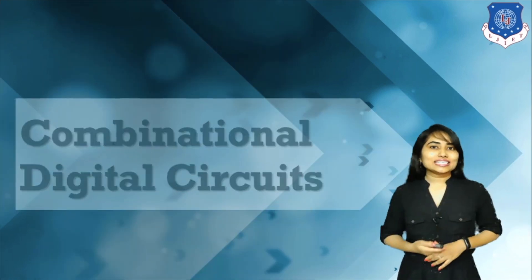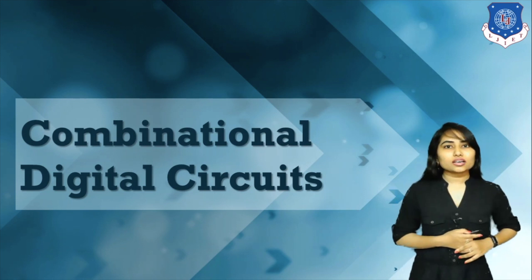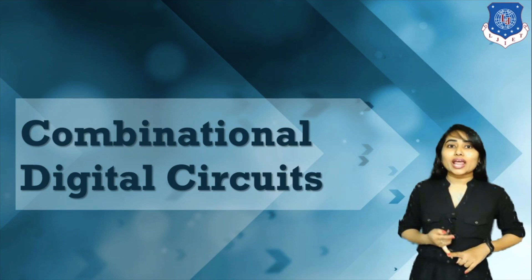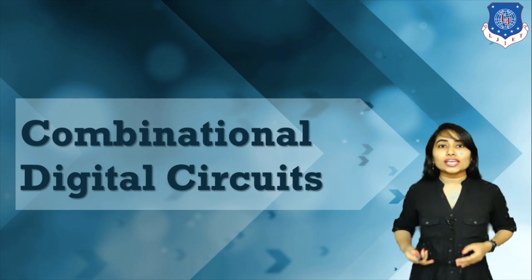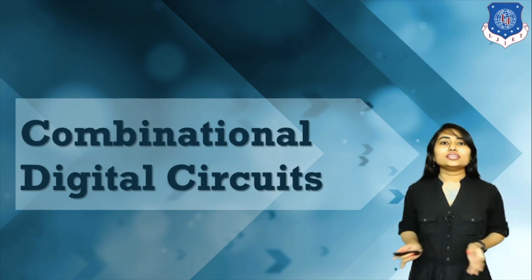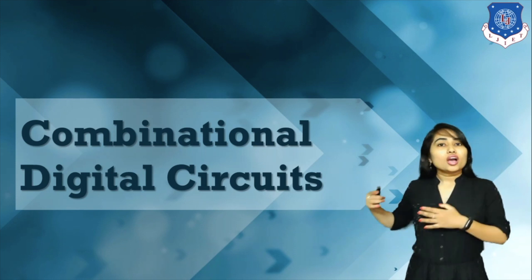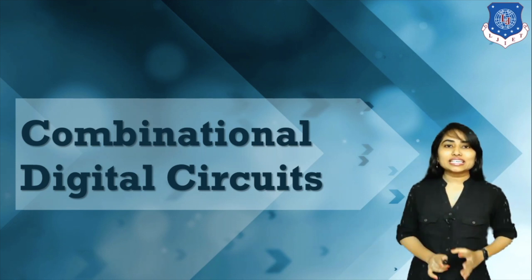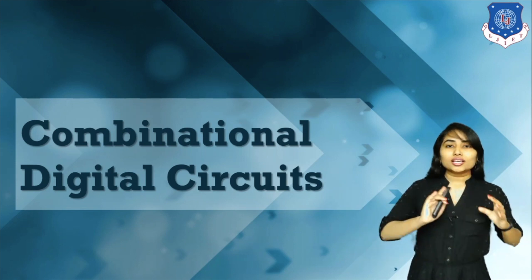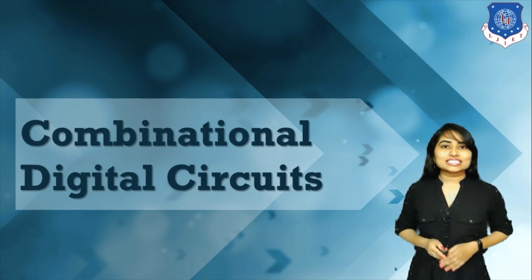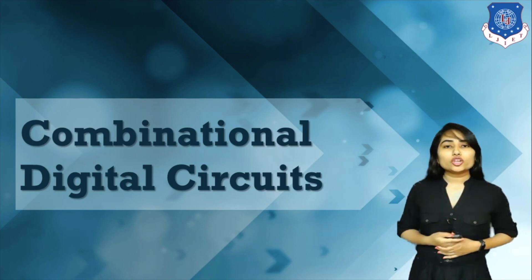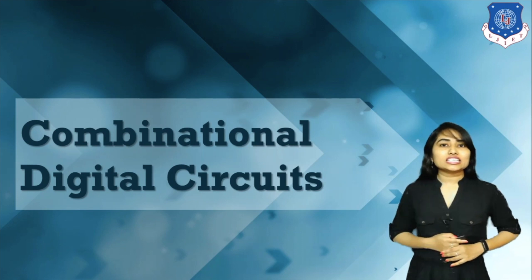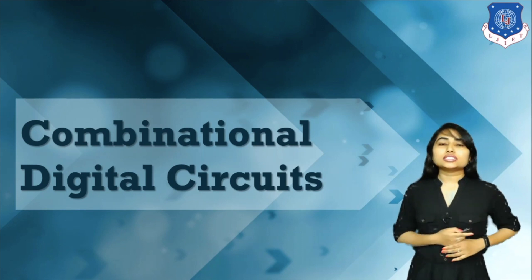Then we have combinational digital circuits. In a CPU there are lots of operations like addition, subtraction, multiplexing, coding, decoding, encoding, and comparison — all performed in the central processing unit. The CPU performs all these operations using combinational digital circuits. There are many combinational digital circuits used in a CPU to process data in various ways, so we have to study them to understand how the CPU processes our data.